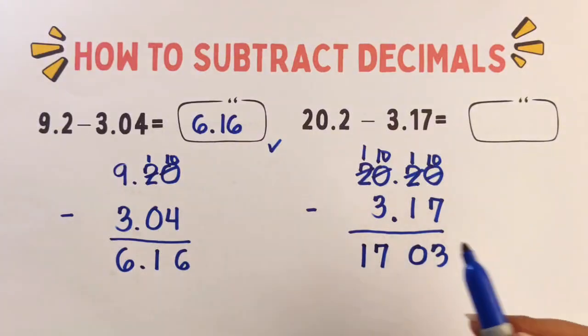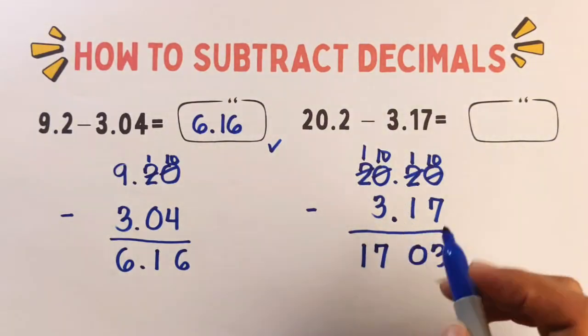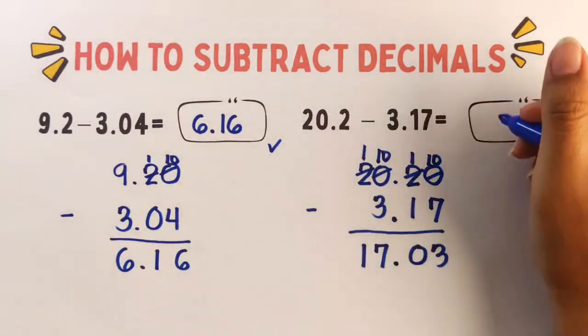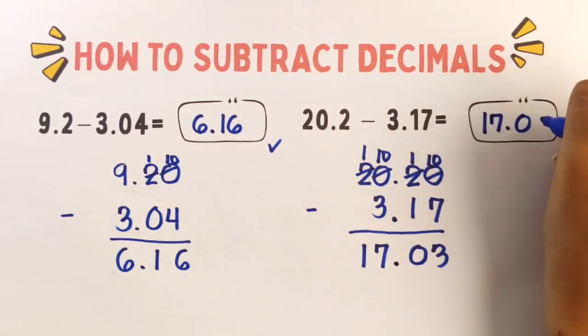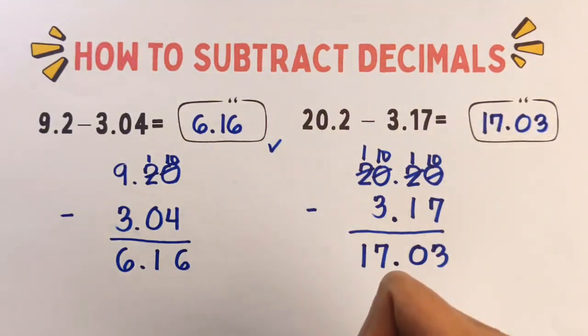Now step number three, again, bring down the decimal point. So the final answer is 17.03. Got it?